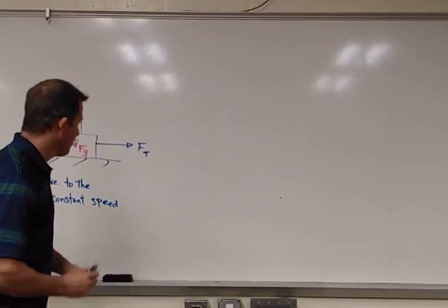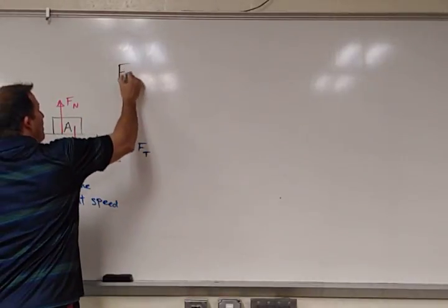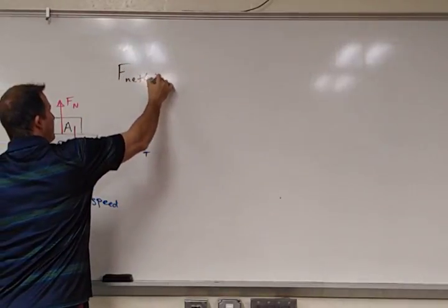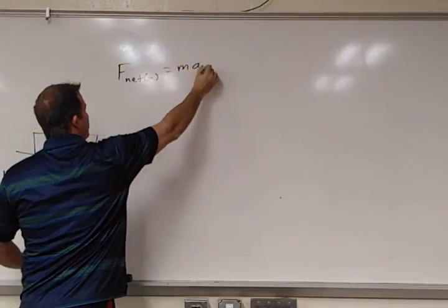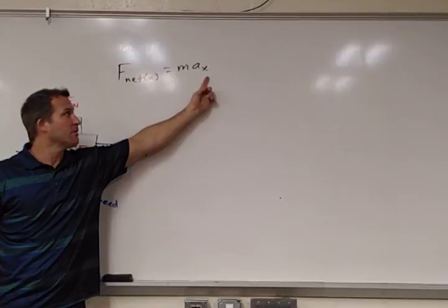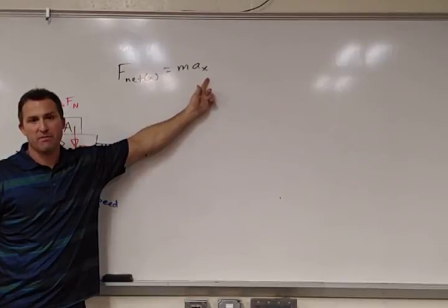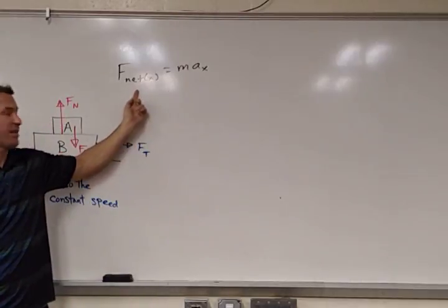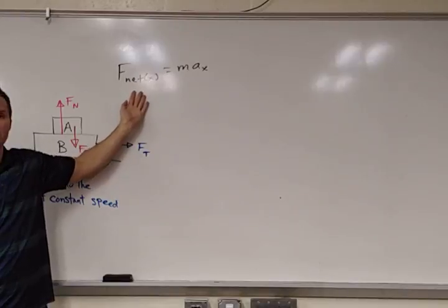Maybe we'll just think about the x component here. If block A has zero acceleration, then it has zero x component acceleration. And if that's the case, then F_net(x) must be equal to zero.